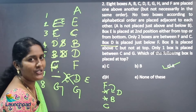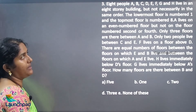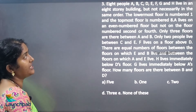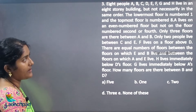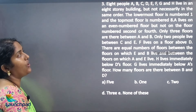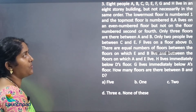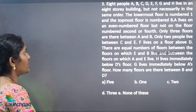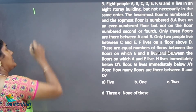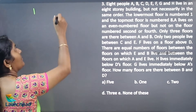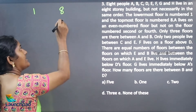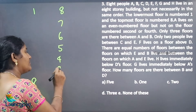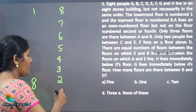Okay. We will move on to the next question. 8 people A, B, C, D, E, F, G and H live in an 8-story building, but not necessarily in the same order. The lowest floor is numbered 1 and the topmost floor is numbered 8. So in previous cases we started 1 to 8, but in this case we number 8, 7, 6, 5, 4, 3, 2, 1.